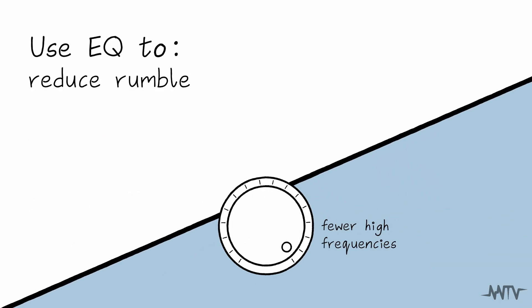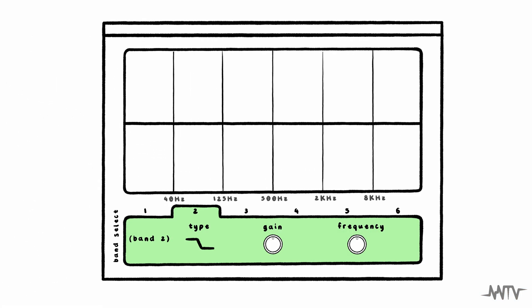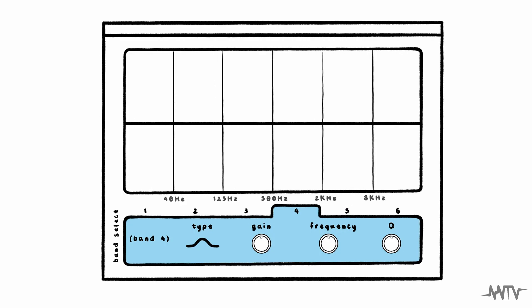Typical EQs are made up of multiple bands. Each band contains a range of frequencies that we can increase or decrease in volume to achieve the effect we're after.